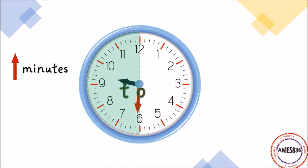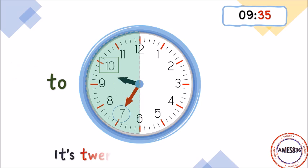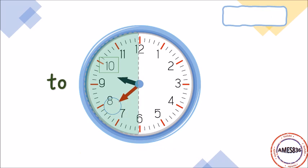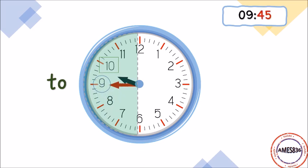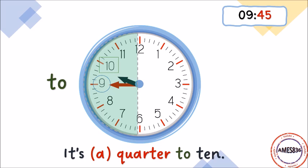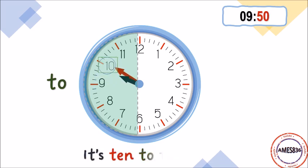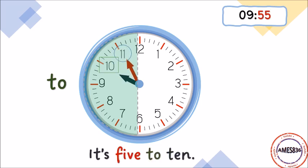For minutes thirty-one to fifty-nine, we can use the word to before the next o'clock. Let's see some examples. It's twenty-five to ten. It's twenty to ten. It's a quarter to ten. It's ten to ten. It's five to ten.